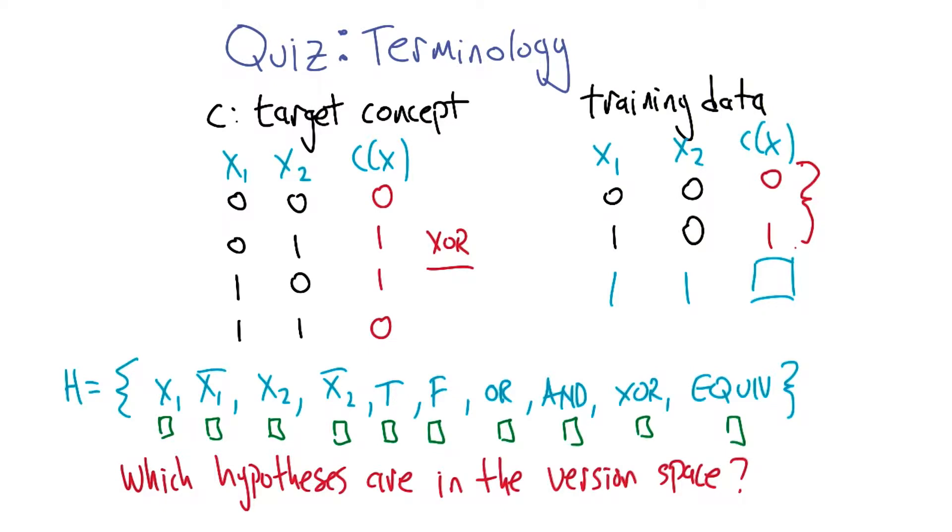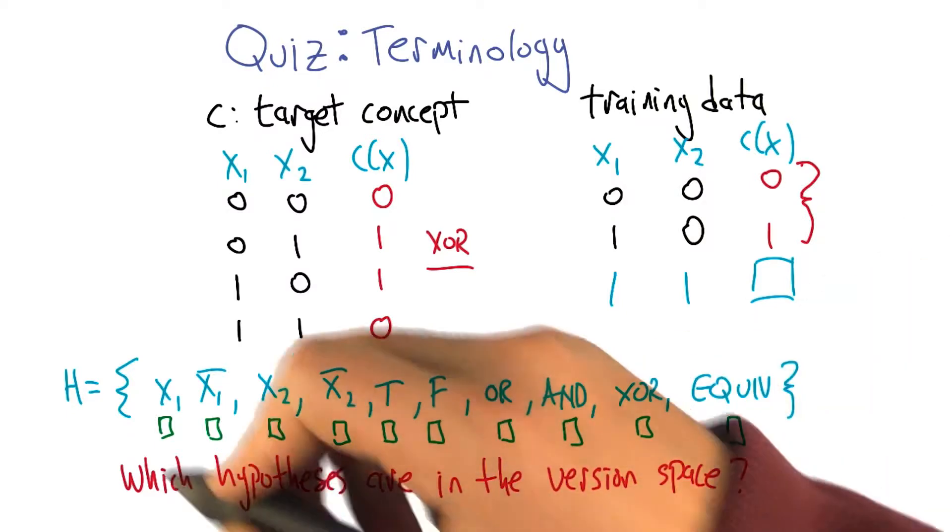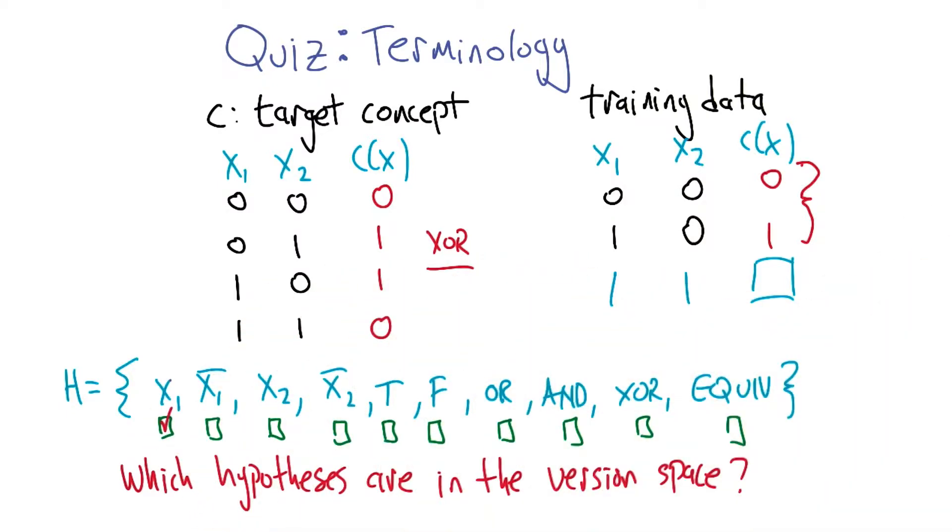So x1, just copy x1 over. Well, if we look at the training data, in the first case x1 is 0 and the output is 0. Second case, x1 is 1 and the output is 1. So that is in fact consistent with just always copying x1. So that is in the version space, right.